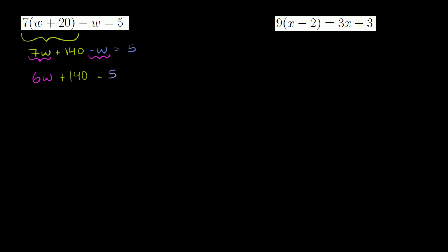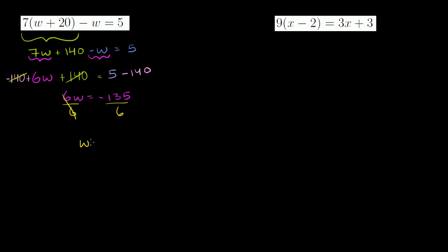Now I want to get rid of this 140, because then I'll have 6w equaling to something, and I'll be able to divide by 6. So to get rid of 140, I subtract 140 from both sides of the equation. Whatever you do to one side, you've got to do to the other side. These two cancel out, leaving 6w = 5 minus 140, which is negative 135. Now we divide both sides by 6, and we get w = -135/6.